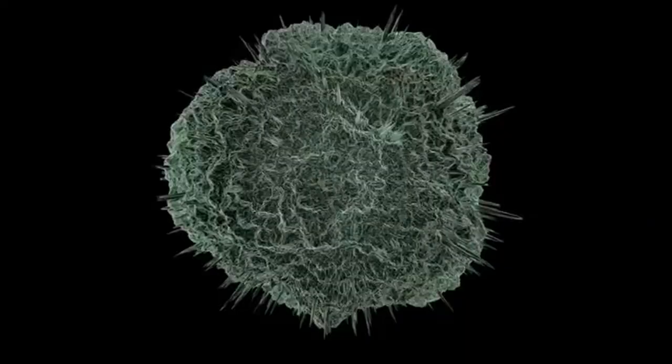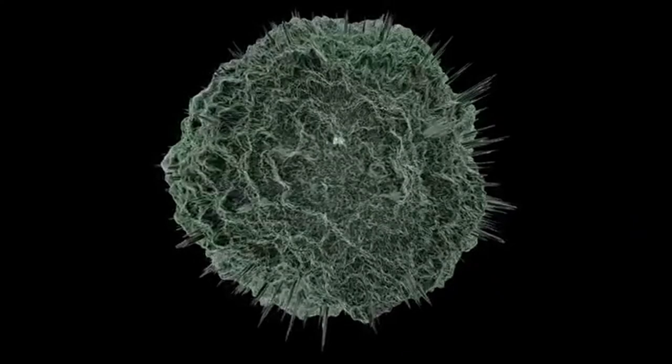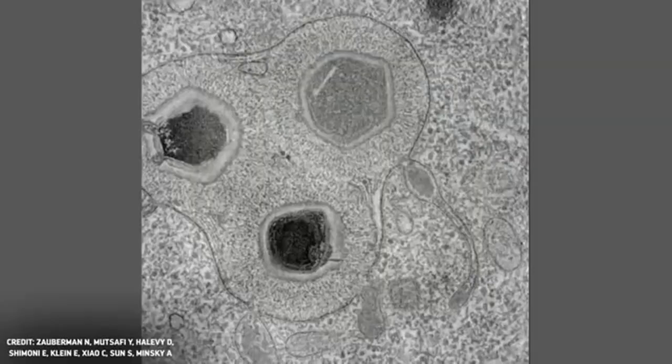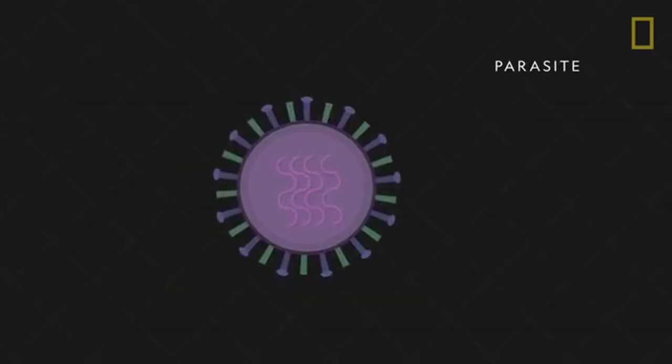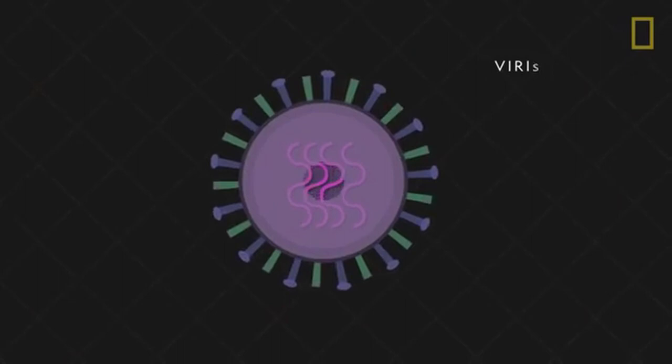The most basic definition of a virus is a microscopic parasite which can infect living organisms and cause disease. A virus is made up of genetic material, either DNA or RNA, and it is usually surrounded by a protective coat of protein called a capsid.